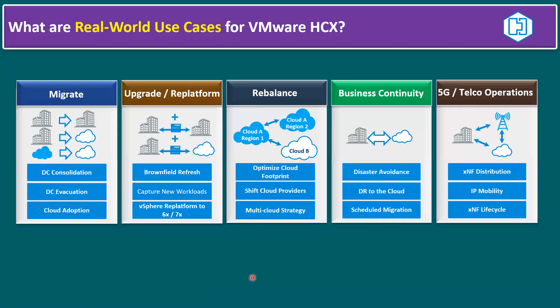Rebalance is another use case — migrating workloads from one region to another. Business continuity and disaster recovery is supported using the SRM (Site Recovery Manager) tool. HCX has also been adopted for telecom customers to enable management of network functions in telecom environments, including features like IP mobility, VNF lifecycle management, and distribution.